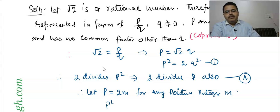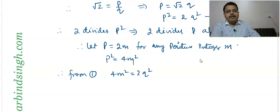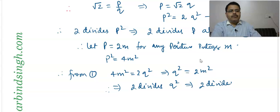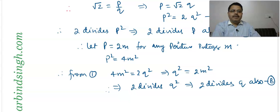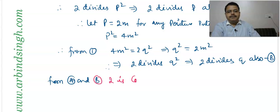From the first equation, we substitute p equals 2m (since 2 divides p, p is a multiple of 2). So p² equals 4m², putting this into 2q² equals p², we get q² equals 2m². This means 2 is a factor of q², so 2 divides q², and therefore by the theorem, 2 divides q as well.